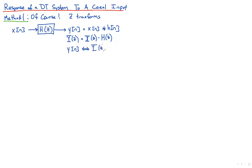Then you take the inverse Z-transform of Y(z) to find y[n]. The typical way to do that is to check if it's proper; if not, divide. Once it's proper, find its partial fraction decomposition, and then recognize the parts from the table. That's the straightforward method.